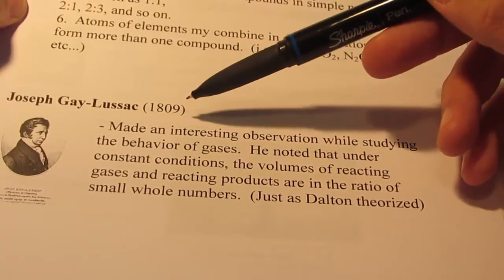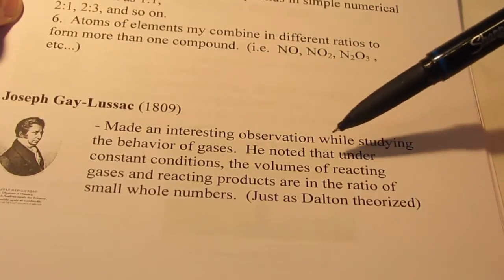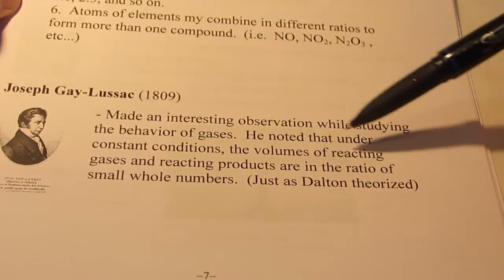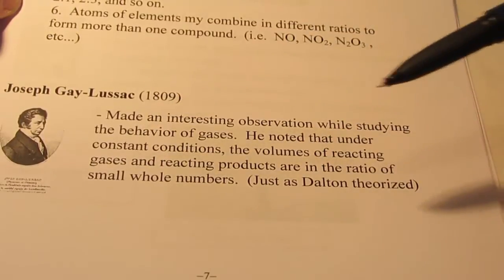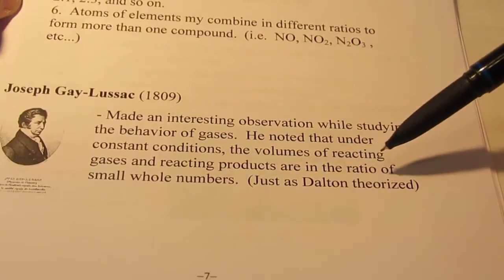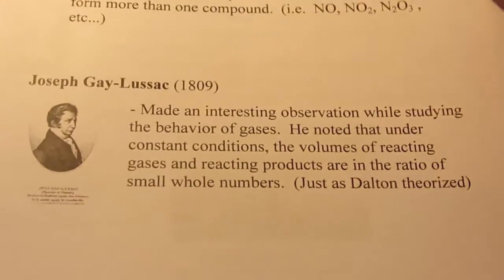Gay-Lussac in the early 1800's made an interesting observation while studying the behavior of gases. He noted that under constant conditions, the volumes of reacting gases, so not masses, but the volume of that gas and reacting products are in a ratio of simple small whole numbers, exactly as Dalton had theorized.